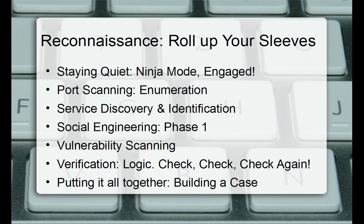We're going to do some port scanning and enumeration - enumerate the hosts on the network, check their ports, see what's open and what's not. We're going to do service discovery and identification based on those ports and what's running on them. We'll be using Nmap as well. We're going to skip the social engineering phase because that's for the external audit. For vulnerability scanning we'll use OpenVAS. Verification, logic - check, check, and check again. Use logic, it is very important. Then we're going to put it all together and build a case.